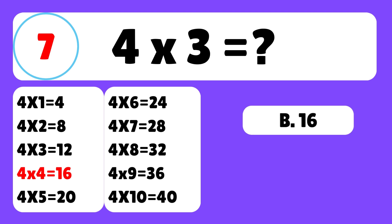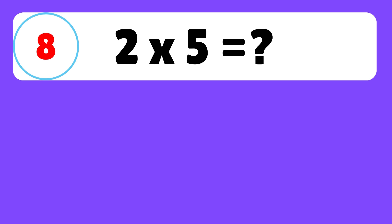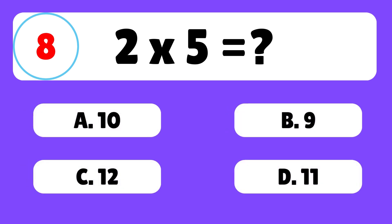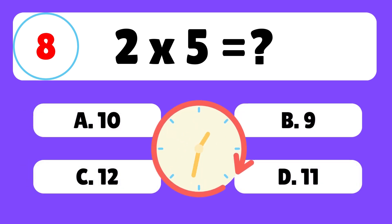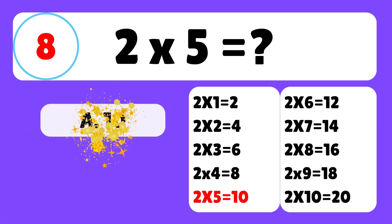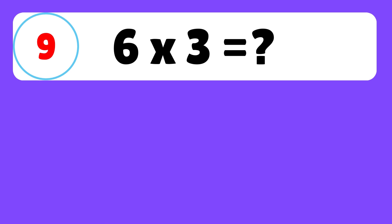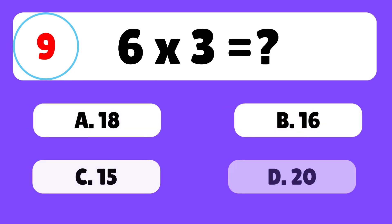The answer is B — four times four is equal to sixteen. Question eight: what is two times five? Two times five is equal to ten.